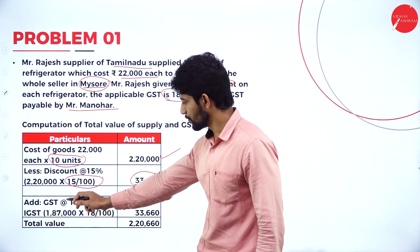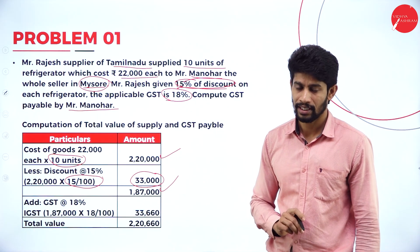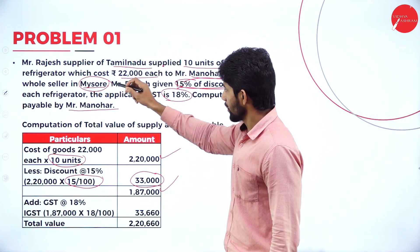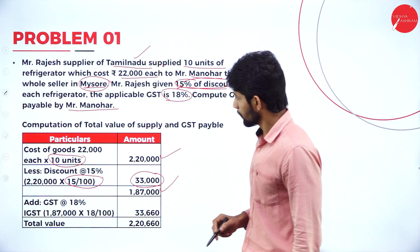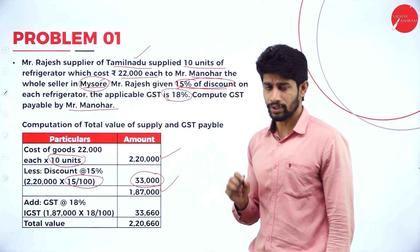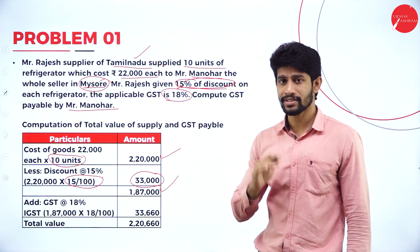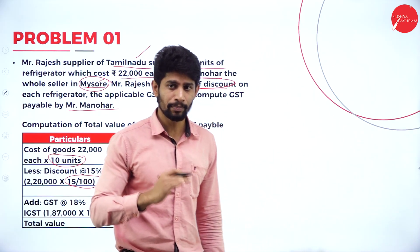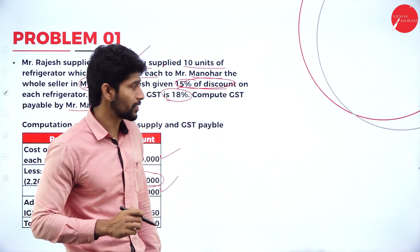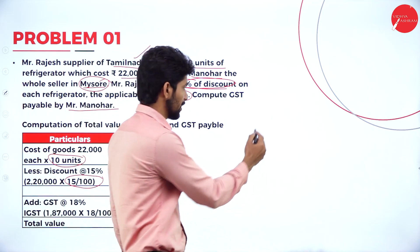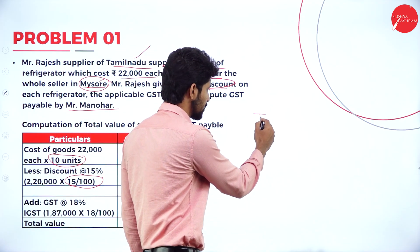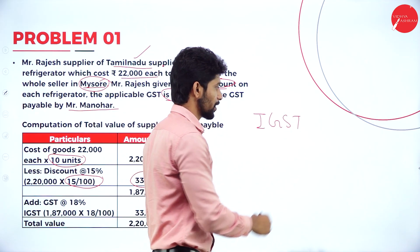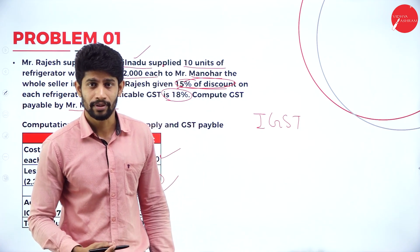Compute GST at 18% on 1,87,000. Here the supplier is in Tamil Nadu and the buyer is in Mysore. So the transaction is happening between two states. If the transaction is happening between two states, which tax is applicable? IGST is applicable.